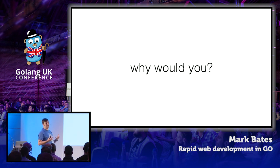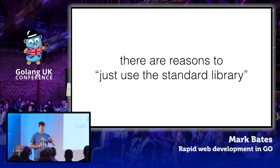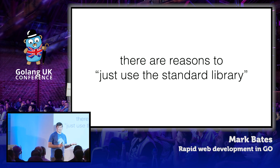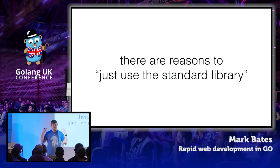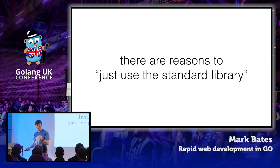Why would you want to spend all that time rolling your own? There are reasons — I'm not going to say there aren't. There are plenty of reasons to just use the standard library. Matt talked earlier about building Gopherize.me in five hours — it's got two or three endpoints. It's a tiny little app. You don't need a Rails to build Gopherize.me. But you know what you do need something like that for? To build a giant web application, a business. You can't roll your own and get that to market anytime soon. For me, it's all about getting to market.